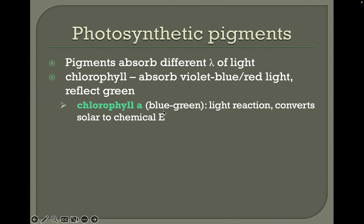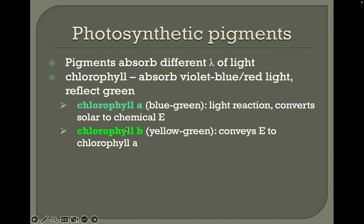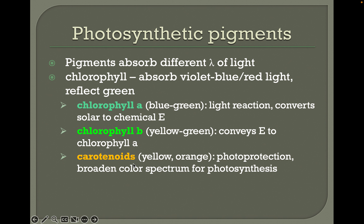Chlorophyll A absorbs blue wavelengths of light, does the light reaction, and converts solar energy to chemical energy. Chlorophyll B focuses more on yellowish-greenish colors and conveys energy to Chlorophyll A. Carotenoids are other pigments involved in photoprotection; they broaden the color spectrum that's utilized for photosynthesis. You'll need to know these three types of pigment — Chlorophyll A, Chlorophyll B, and carotenoids — and be able to tell what colors of light they absorb.